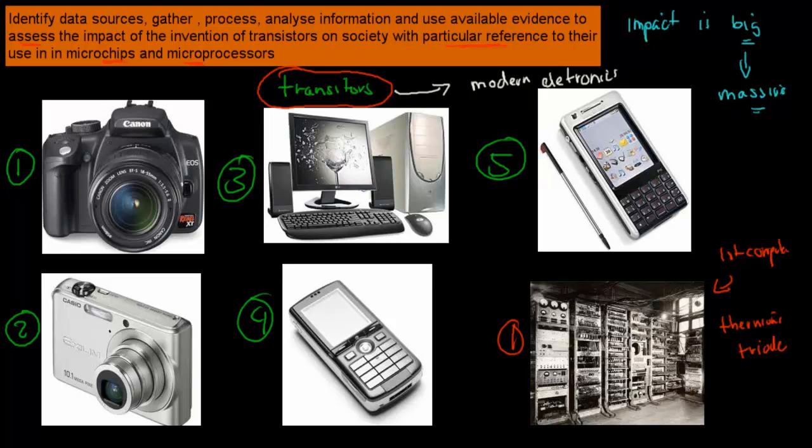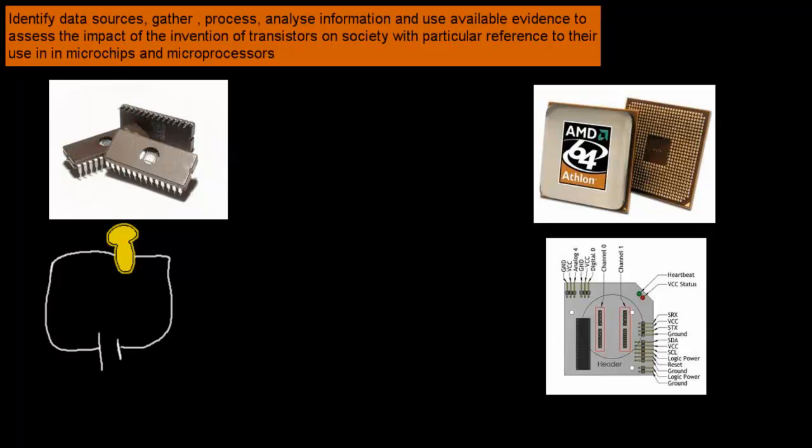And the reason why is because the second part says talk about in particular reference to their use in microchips and microprocessors. So how we use transistors in microchips and microprocessors is what really changed modern electronics. What microchips and microprocessors are, it's just we often call them the integrated circuits.